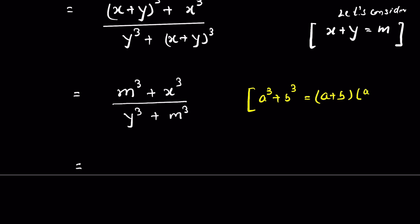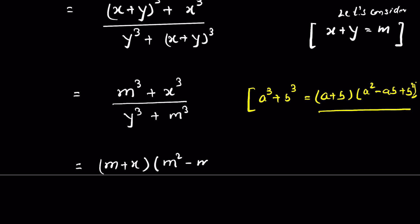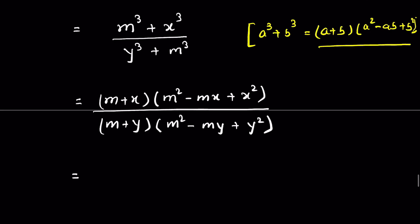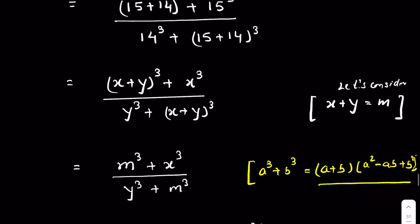Applying the a³ + b³ formula, the numerator m³ + x³ becomes (m + x)(m² − mx + x²), and the denominator y³ + m³ becomes (y + m)(m² − my + y²). Now we substitute m = x + y back in.